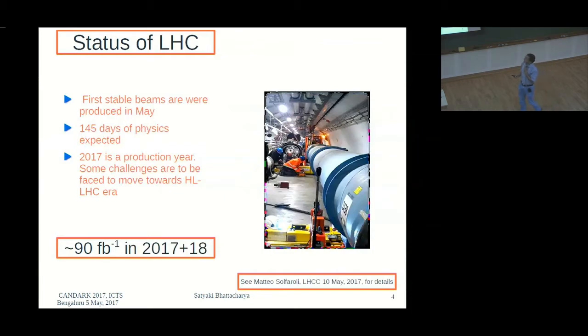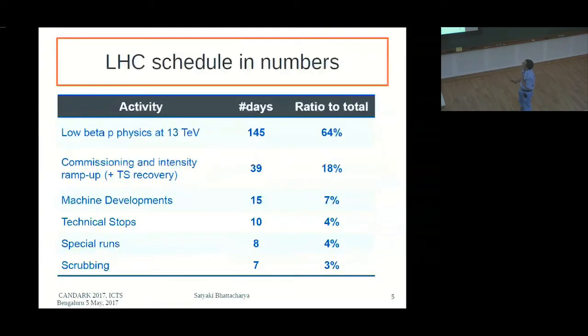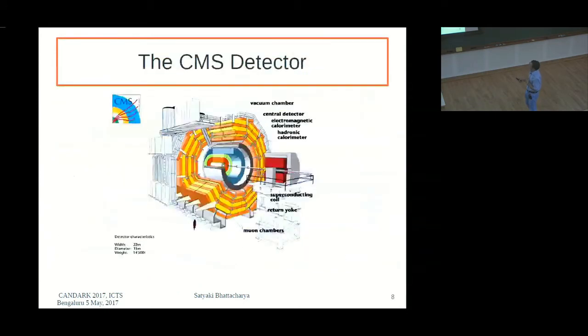Status of LHC. LHC for this year has just started. First stable beams were produced in May, and 145 days of physics expected. 2017 is a production year. There are some challenges to be faced towards moving to the high luminosity LHC era. We would expect about 90 femtobarn inverse in 2017 and 2018.